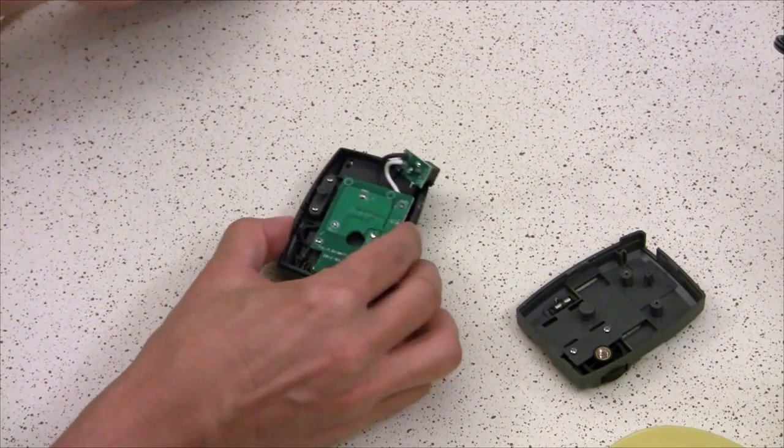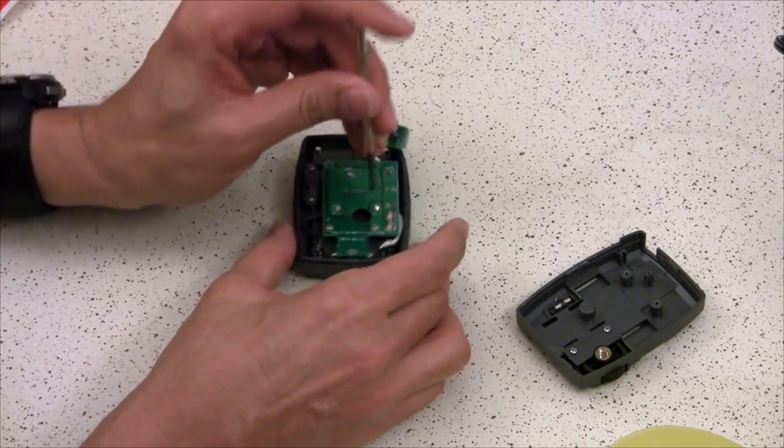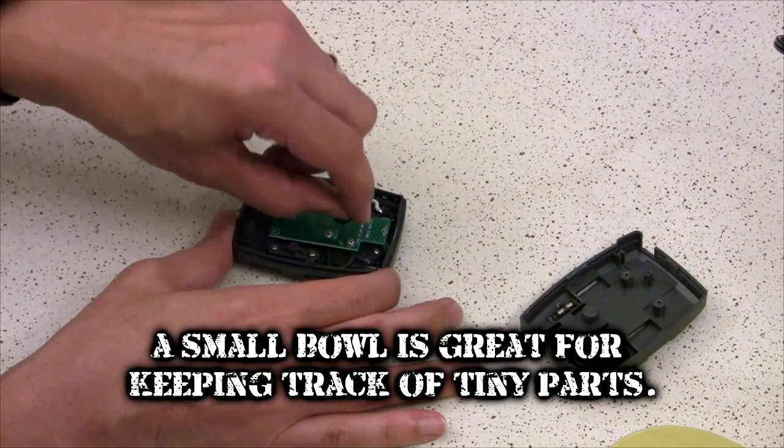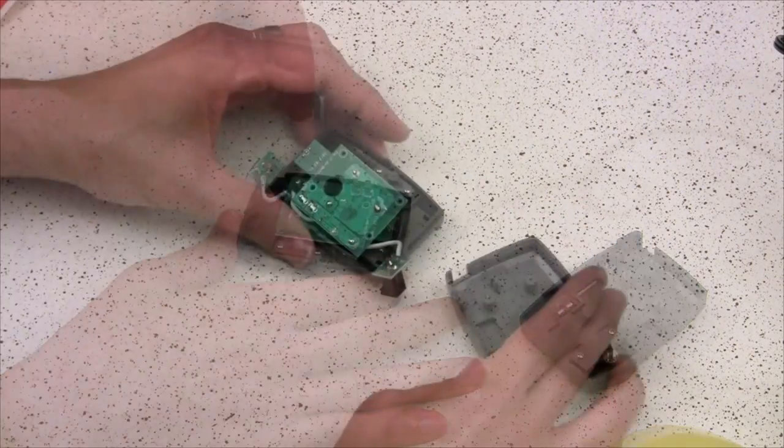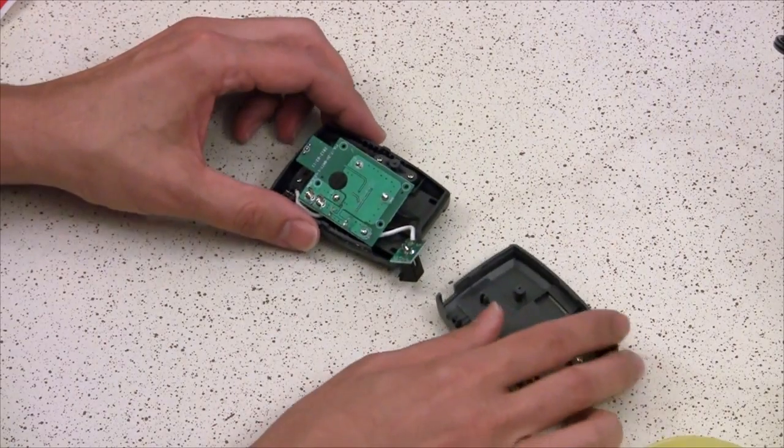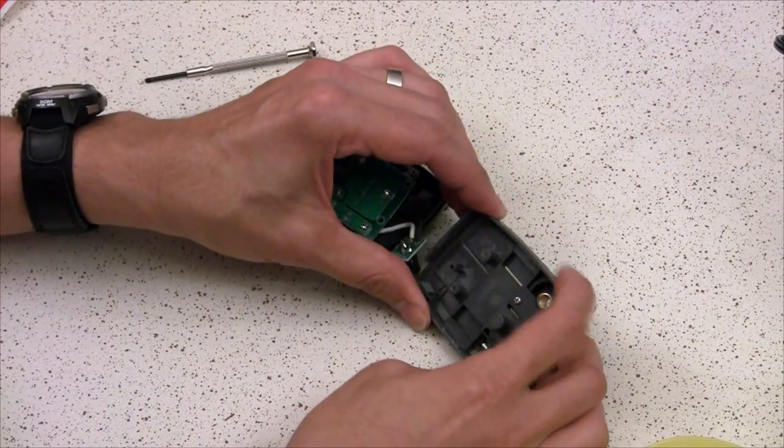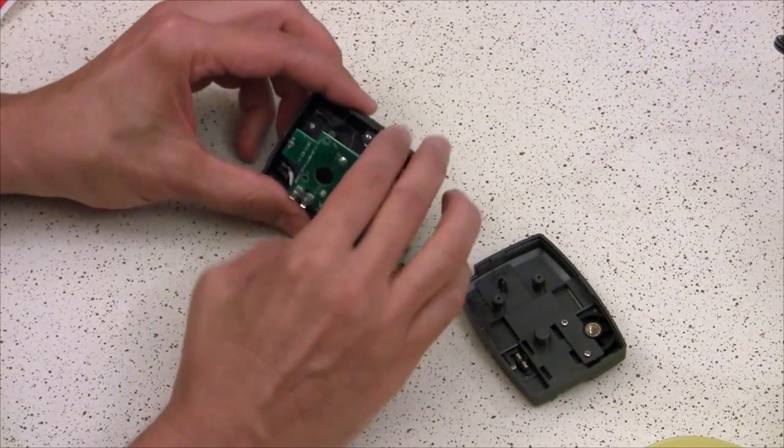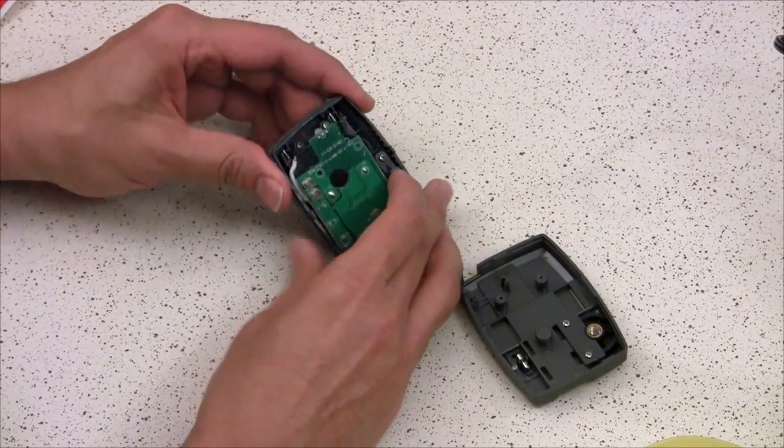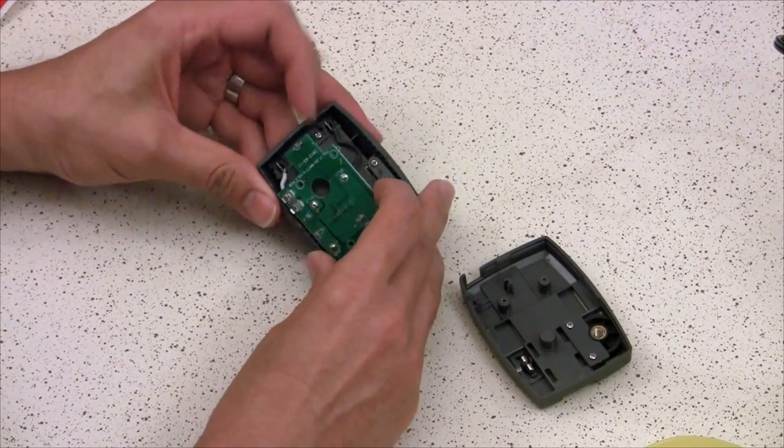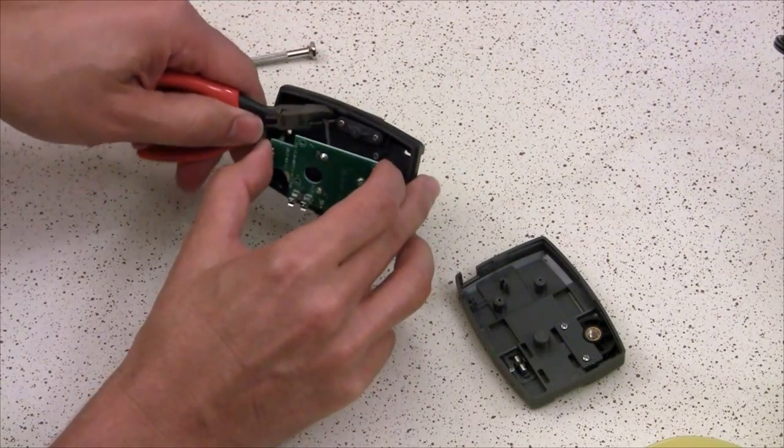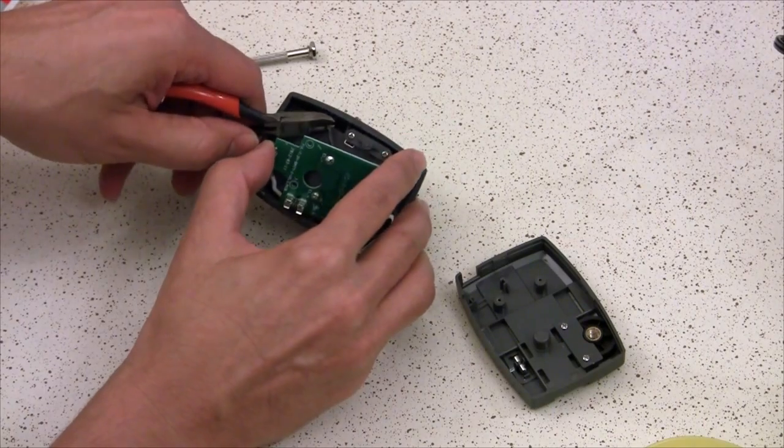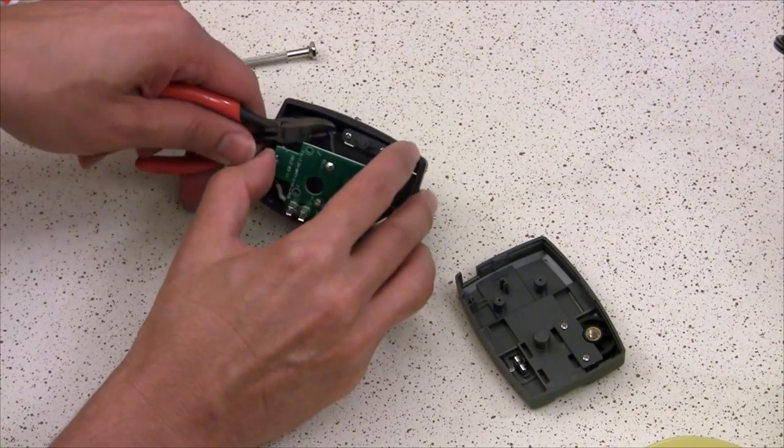Next thing you want to do is remove the circuit board using, again, the small Phillips screwdriver. Now, since we're going to install the switch here where the wheel is, we're going to tap into this black wire right here. You've got a black wire and a white wire, and that's the power cables coming from the battery. I'm cutting it about halfway in between the circuit board and the battery connector.